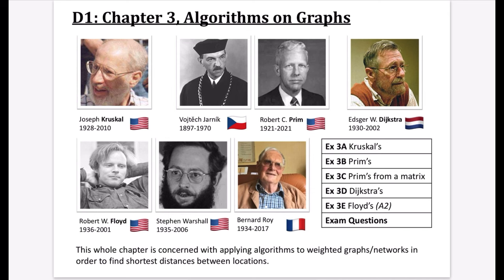Joseph Kruskal was alive until 2010 and was an American mathematician. I've included Wojtek Jarník because he was actually a Czech mathematician who came up with Prim's algorithm before Robert C. Prim published it under his name. There's evidence that Jarník had actually published or come up with the algorithm previously.